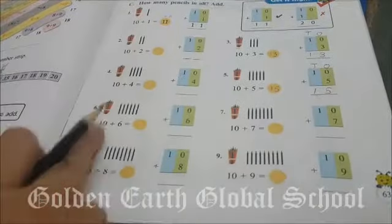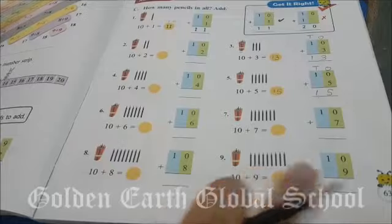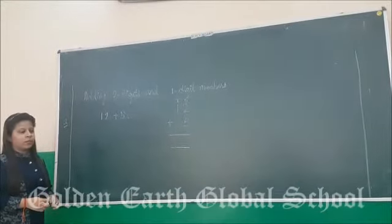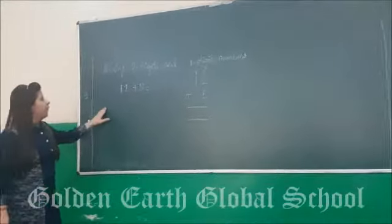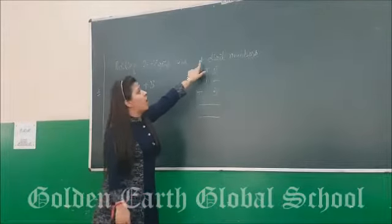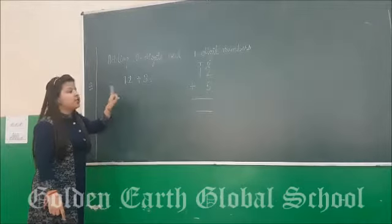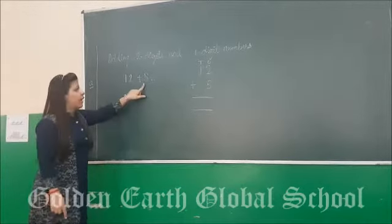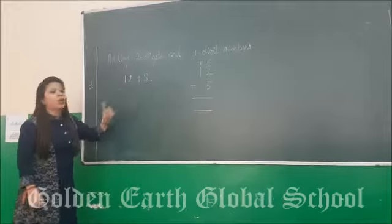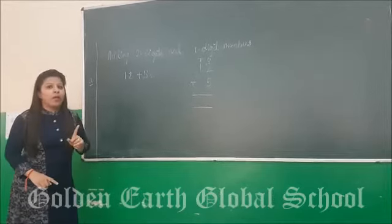In the same way you have to solve the rest of the parts by yourself. Next, we have 12 plus 5. 12 is a 2-digit number and 5 is a 1-digit number. We have to add this 1-digit number 5 to 12.